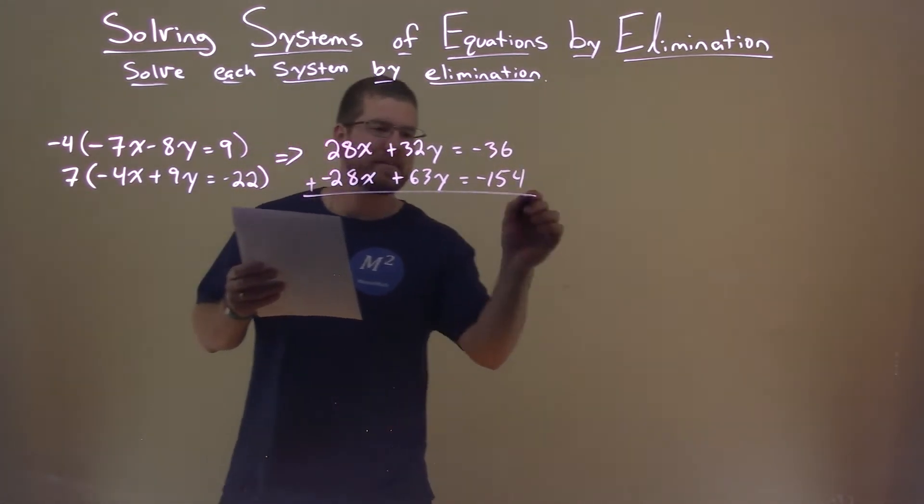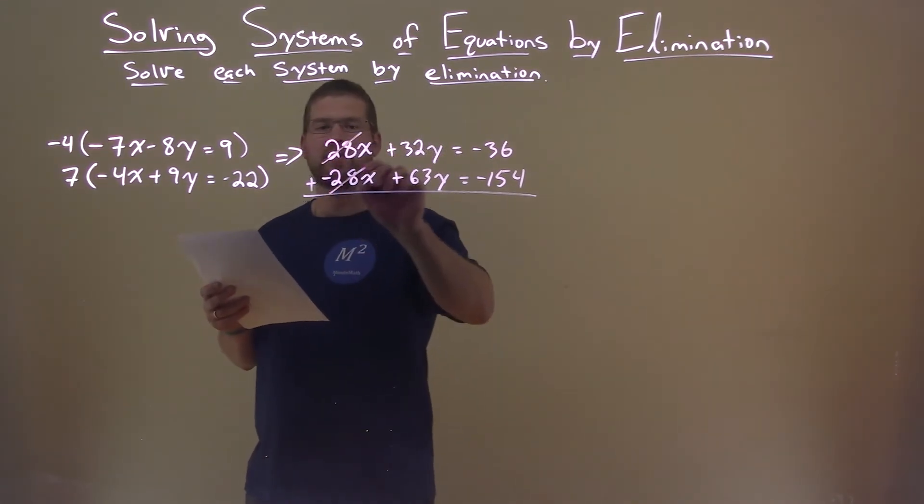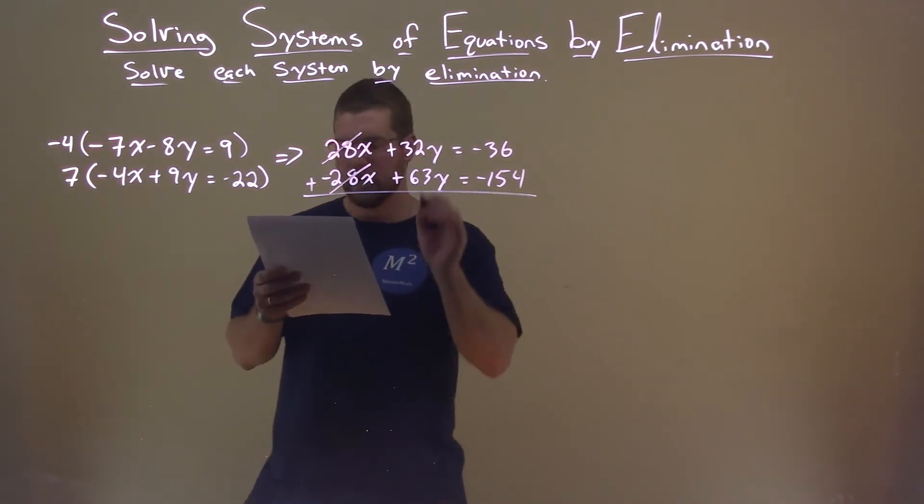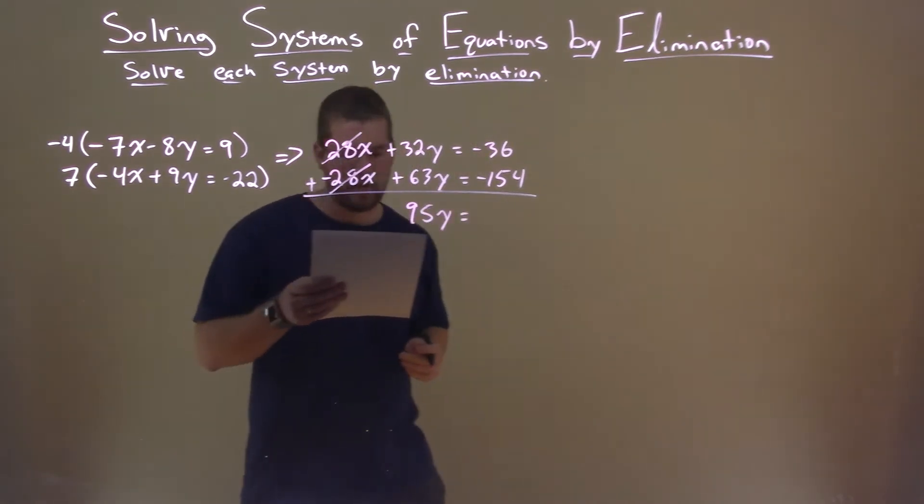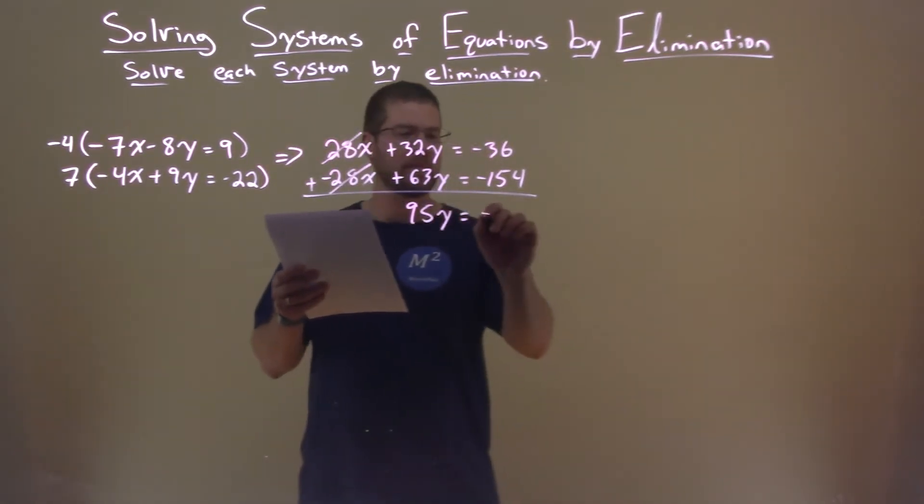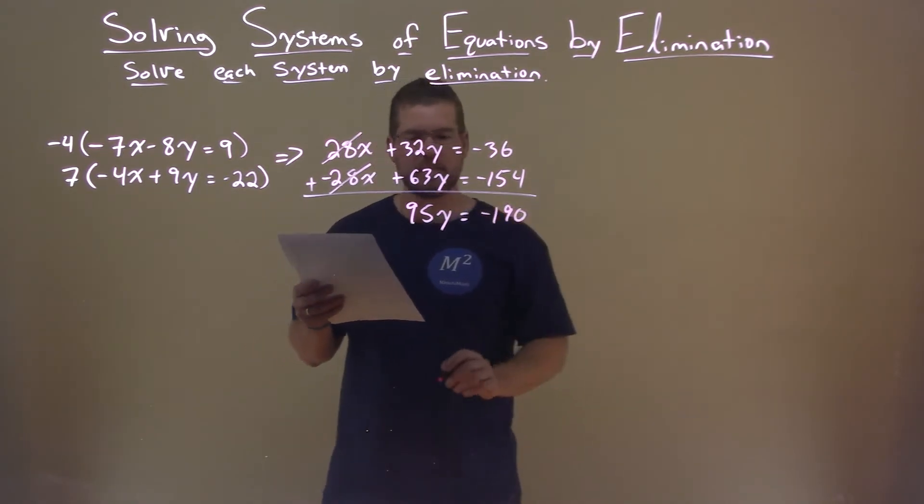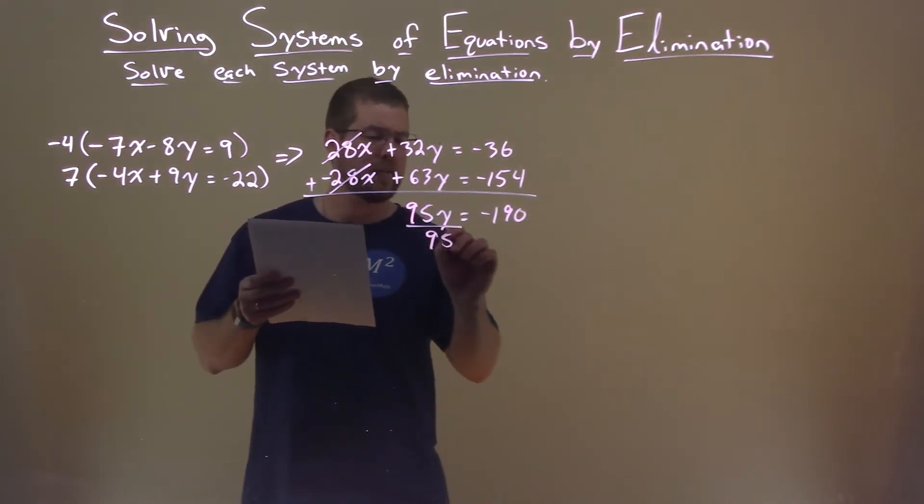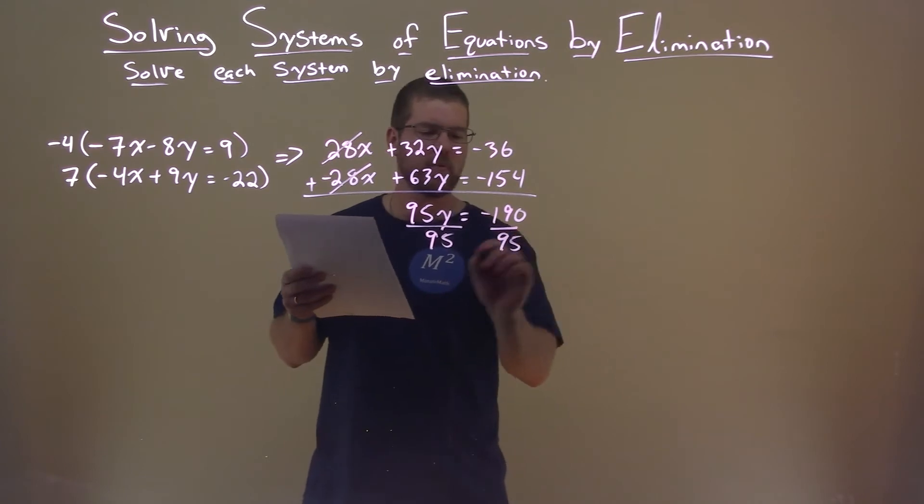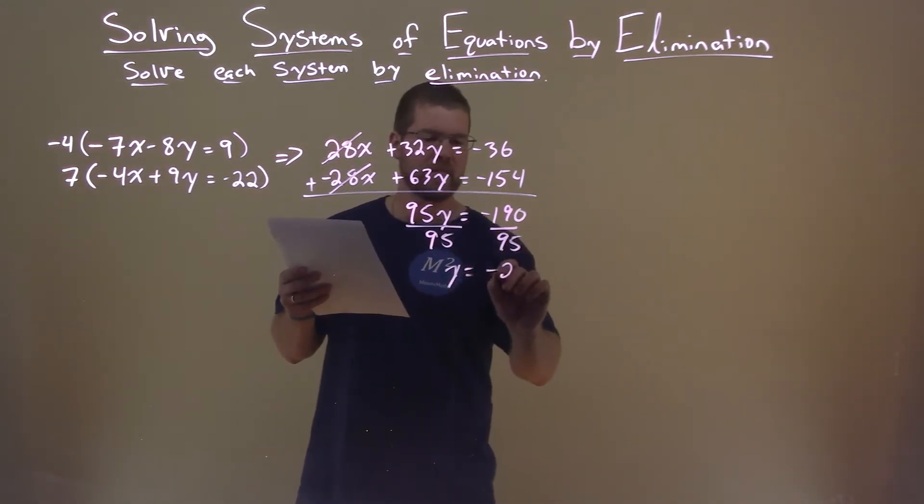We add the two equations together. The x's get eliminated. And we're left with 32y plus 63y, which is 95y. Negative 36 plus negative 154 is negative 190. Divide both sides by 95, and we get the answer of y equals negative 2.